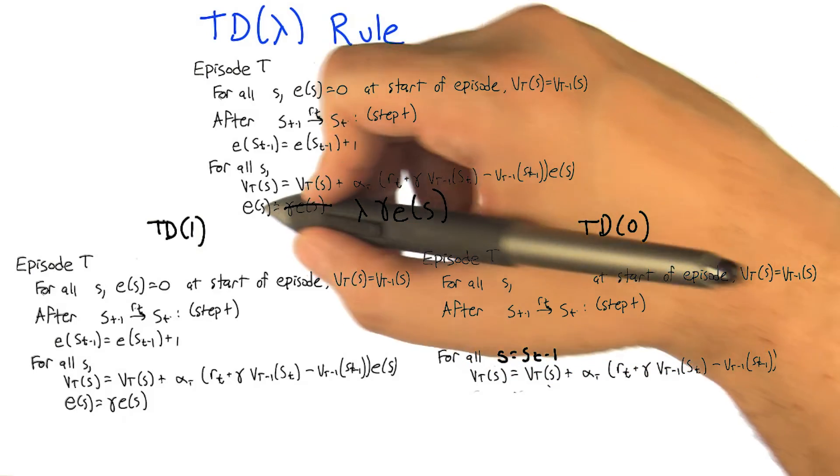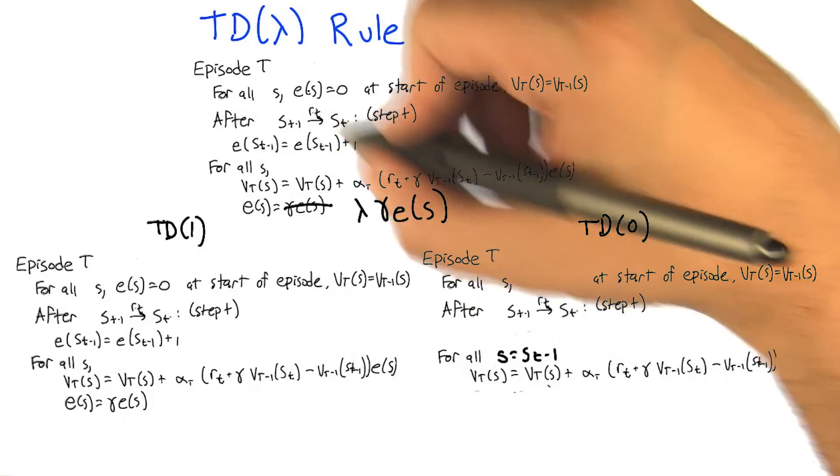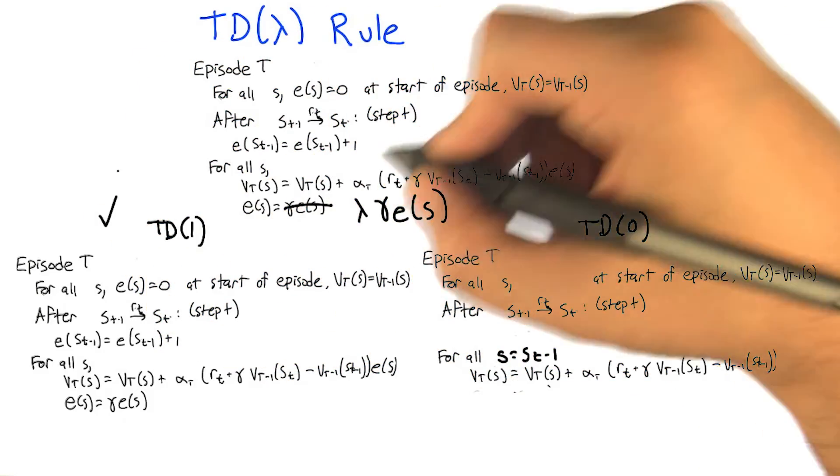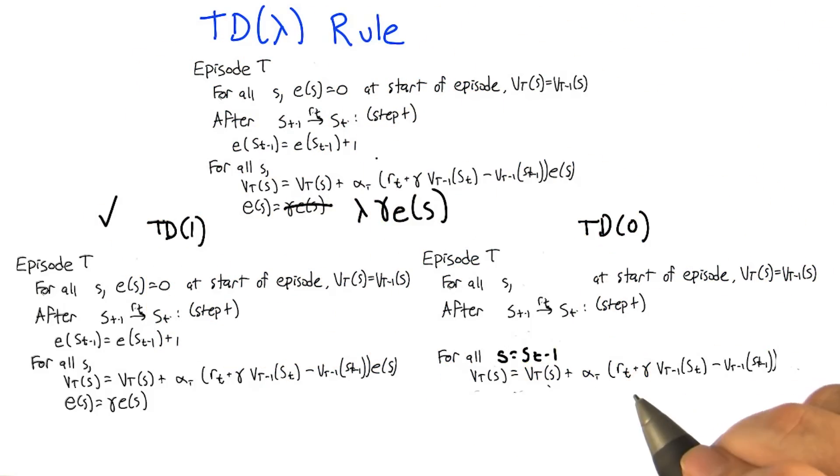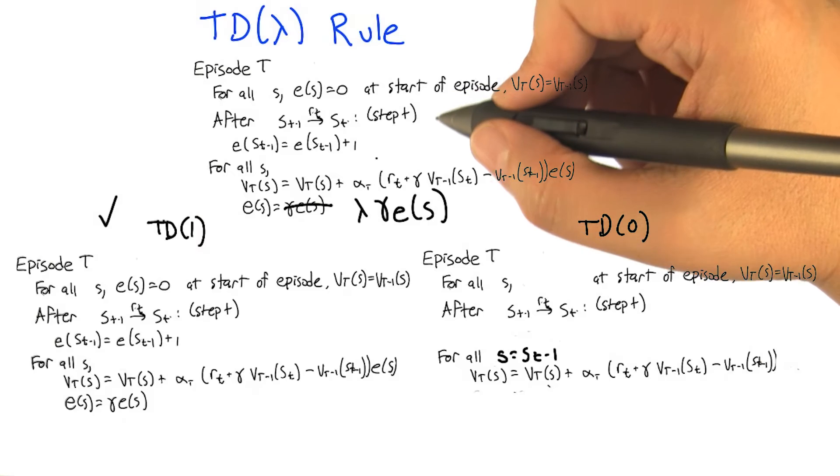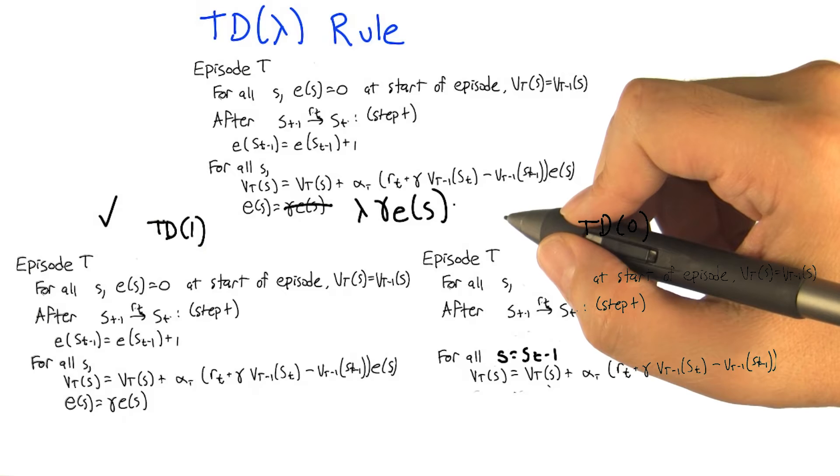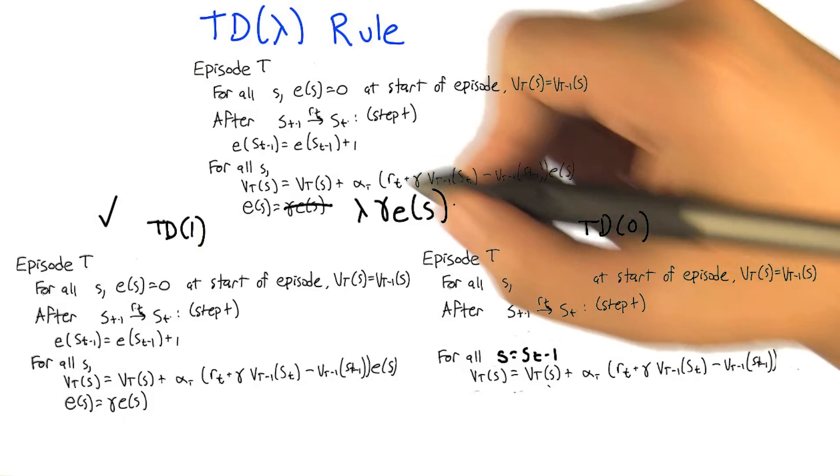Right, great, because if lambda is equal to 1 and we're just multiplying this lambda in there, then nothing's changed. So boom, it really is, and it was TD(1) and it is TD(1). Right. So let's see, what happens if lambda is 0? Well, for the thing we just looked at, that means it's 0, so you just set the eligibility trace equal to 0. Right. But you started out with it being equal to 0, too.